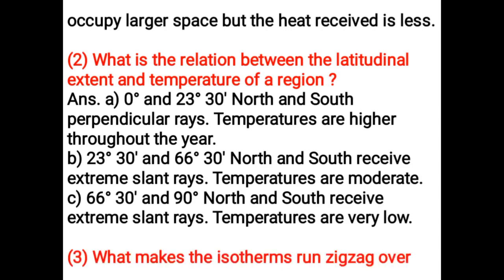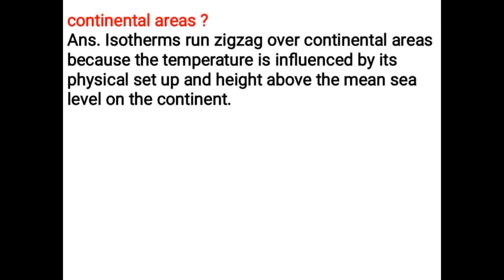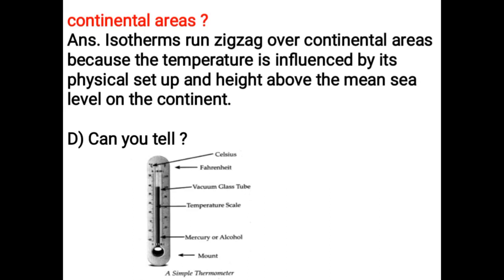High-level question: What makes the isotherms run zigzag over continental areas? Isotherms run zigzag over continental areas because the temperature is influenced by the physical setup and height above the mean sea level on the continent.